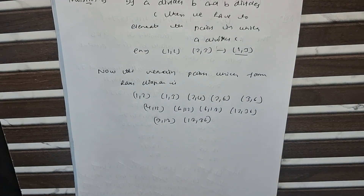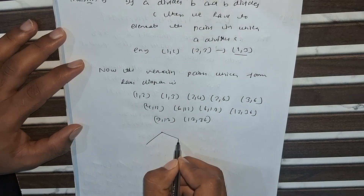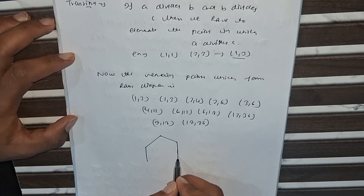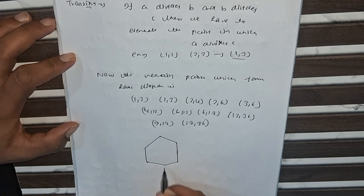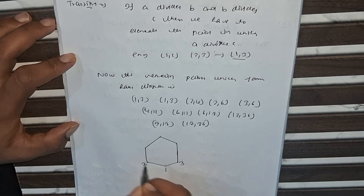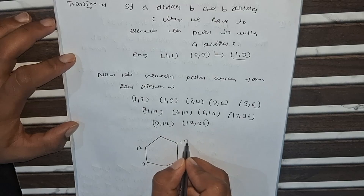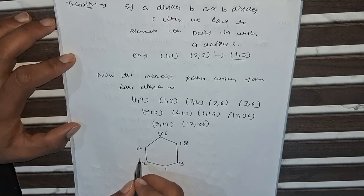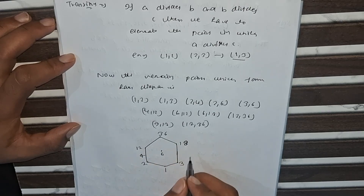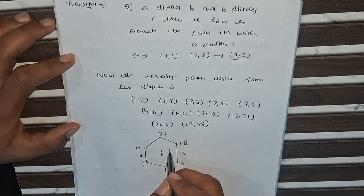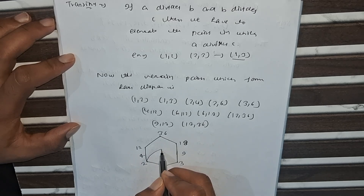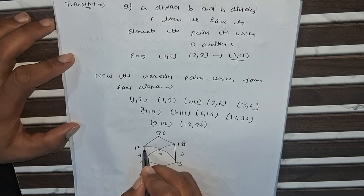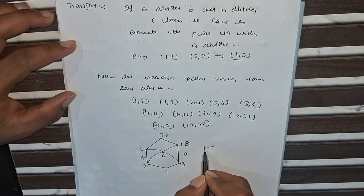Now we draw the Hasse diagram. We start from the lowest element which is 1, then go up through 2, 3, 4, 6, 9, 12, 18, and 36 at the top. 4 is there, 6 is in between, and 9 is there. 2 goes to 6 to 18, and 3 goes to 6 to 12. This is our final Hasse diagram.